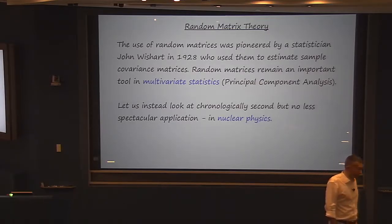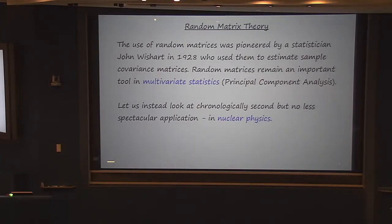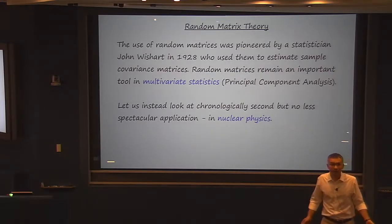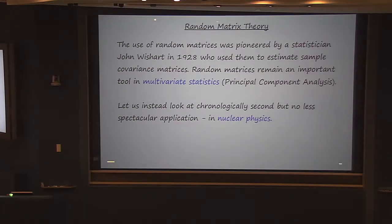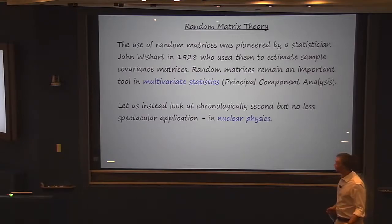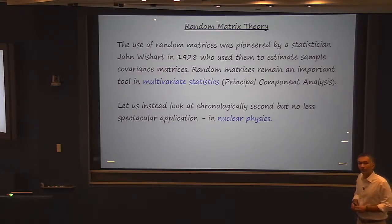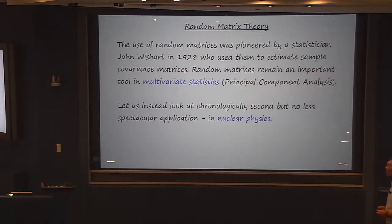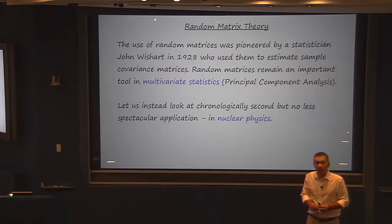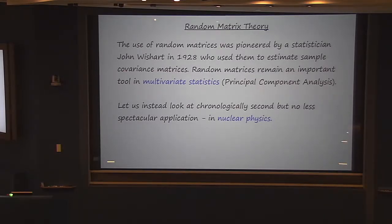The next example I want to talk about is known as random matrix theory. Random matrix theory was invented by a statistician named Wishart in 1928, during the time of development of multivariate statistics. He used random matrices to estimate sample covariance matrices. Even now, random matrices remain a very important tool in statistics, big data, and machine learning — people use them in principal component analysis. But I will instead look at the next place chronologically where random matrices appeared and made an impact: nuclear physics.